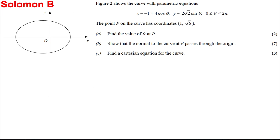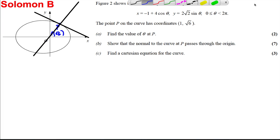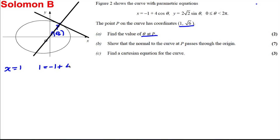Let's have a go at this question. I've put in point P at (1, √6) and drawn the tangent and normal to show what we're aiming for. At P we have coordinates (1, √6). The x-coordinate equals 1, so we can write: 1 = -1 + 4cosθ. And y = √6, so we can write: √6 = 2√2 sinθ. We can solve both for θ to find the value that satisfies both simultaneously.